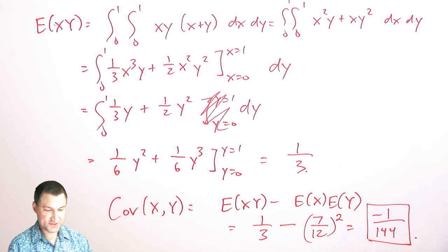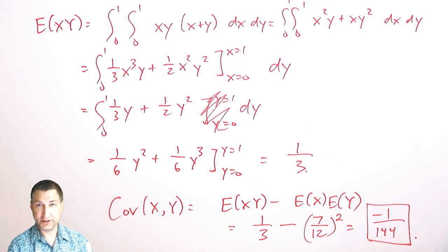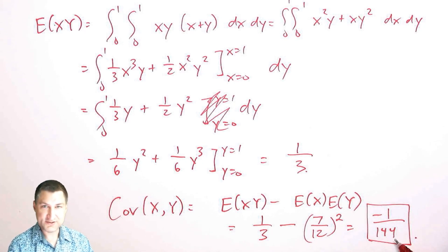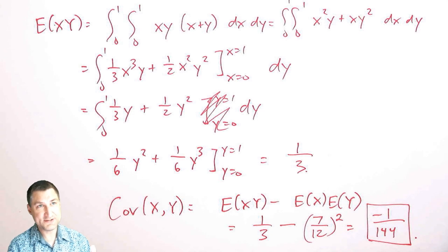So first of all, since the covariance is not equal to zero, I can say that these variables are correlated. They're not uncorrelated. And one other thing to note is that I found out here the covariance is negative, and that's okay.